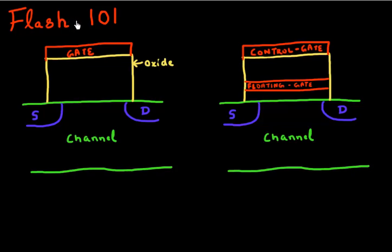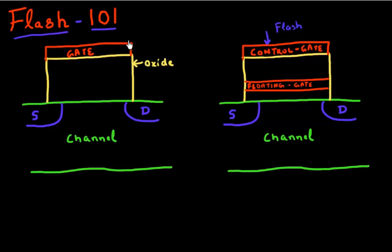My purpose in this video is to explain the basics of flash memory operation — how the device works and how you can program and erase a flash memory cell. The first thing I want to do is compare the flash memory to a transistor device. Drawn here is a cross section of a flash memory cell, and drawn over here is a cross section of a normal transistor. If you compare them, they look very similar.